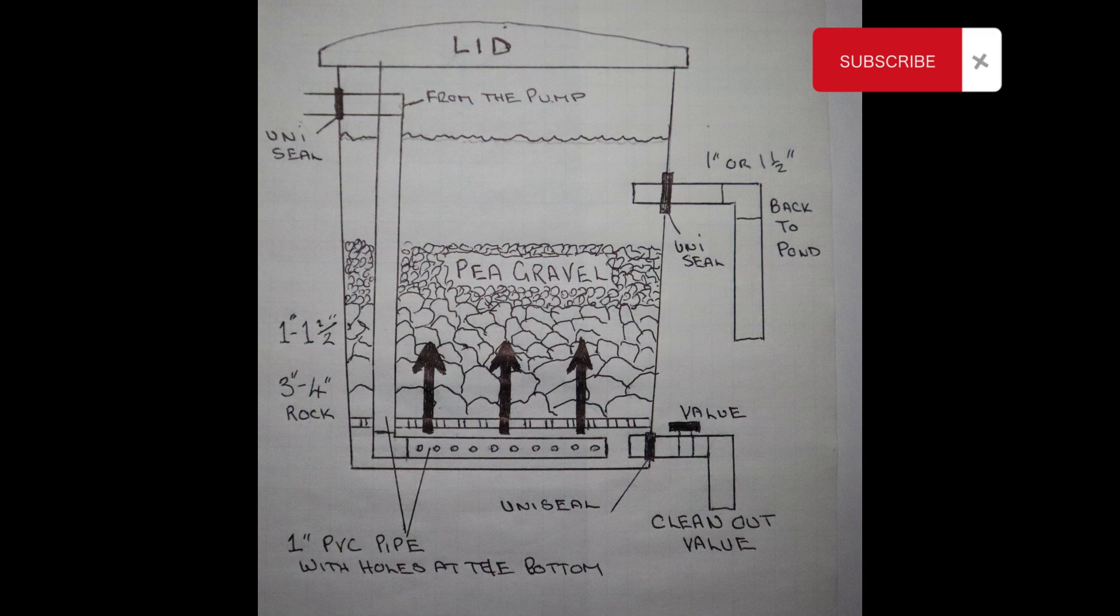Then I put an elbow on and take it across the bottom. The pipe has to have holes drilled into it to allow the water to enter the void. Make the holes about a quarter of an inch or bigger so that any solids can pass through.